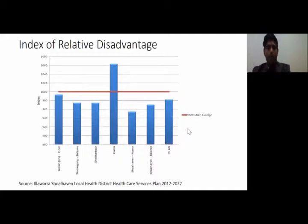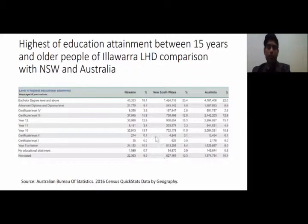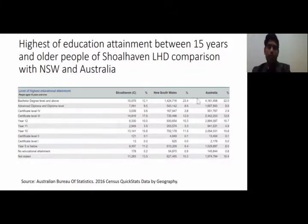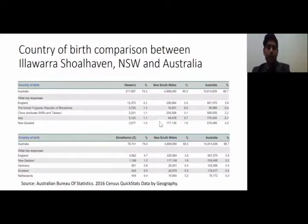The Socio-Economic Index for Areas shows that Illawarra Shoalhaven's population is more disadvantaged than the NSW average. The median weekly income for people aged 15 years and over in Illawarra and Shoalhaven is lower than both NSW and Australian averages. Higher education degree attainment in both areas is also lower than NSW and Australia, with nearly 7% of the population in both areas unemployed.